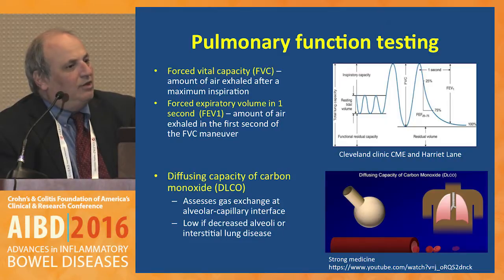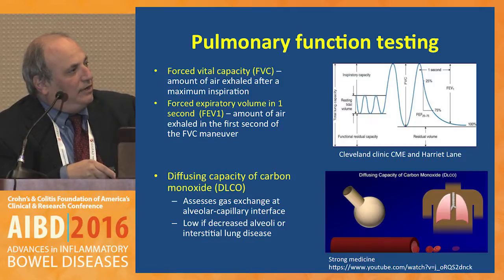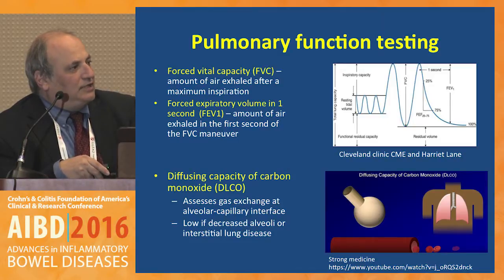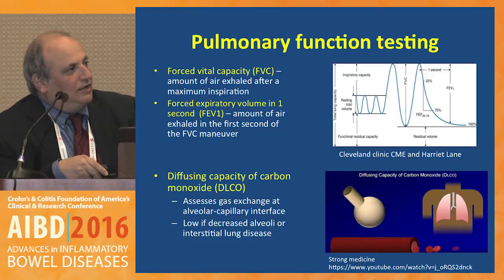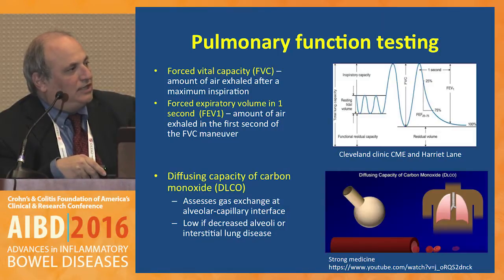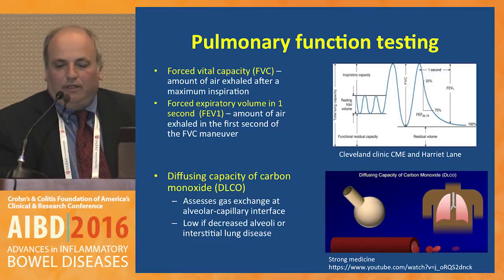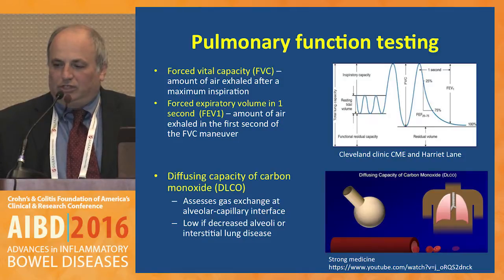FEV1 is a measure of how quickly you can blow things out, reflecting bronchial thickness. The other test in pulmonary function testing is the diffusing capacity of carbon monoxide, or DLCO. You blow in a very small amount of carbon monoxide; it gets into the alveoli and normally crosses into the blood vessel. If you have interstitial lung disease or parenchymal disease, the carbon monoxide can't get across. This is a good measure for decreased alveolar function or interstitial lung disease.